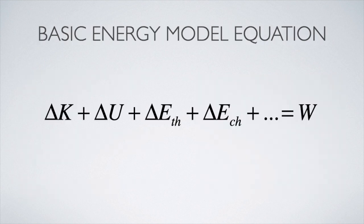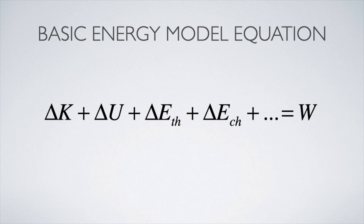Here's our basic energy model written out as an equation: the change in kinetic energy plus the change in potential energy plus the change in thermal energy plus the change in chemical energy equals the work done on the system. If the system is completely isolated, then the work term on the right-hand side equals zero. In the next video we will learn how to put quantities and expressions to each of those terms — kinetic energy, potential energy, thermal energy, and work — and then use this basic energy model and the law of conservation of energy as a problem-solving equation.